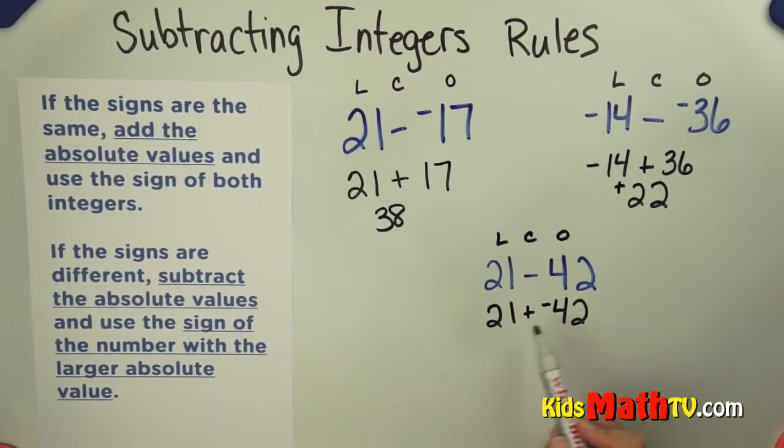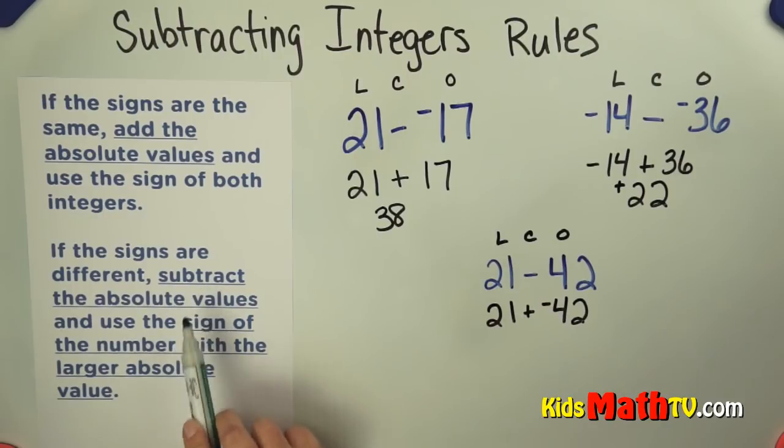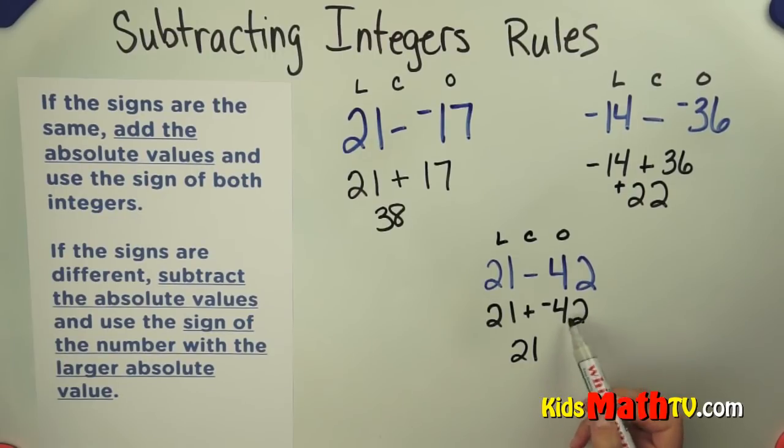Let's take a look at our last one. The signs are different, so we're going to subtract their absolute values. 42 minus 21 is 21. We give it the sign of the number with the larger absolute value. Negative 42 has a larger absolute value than 21, so we have a negative answer.